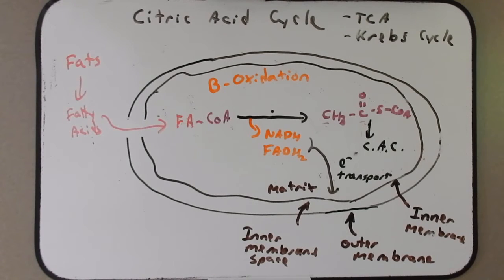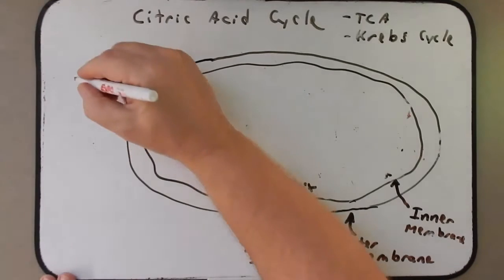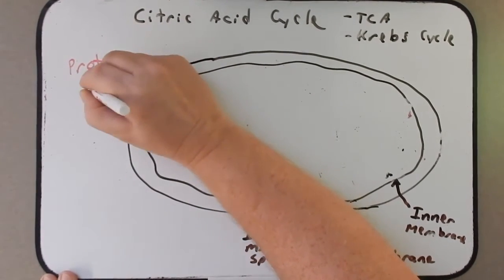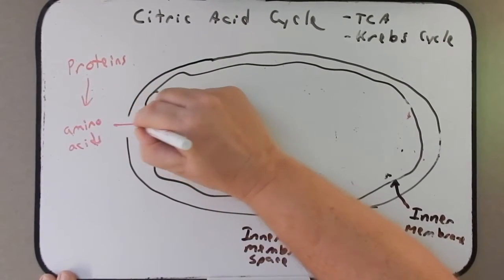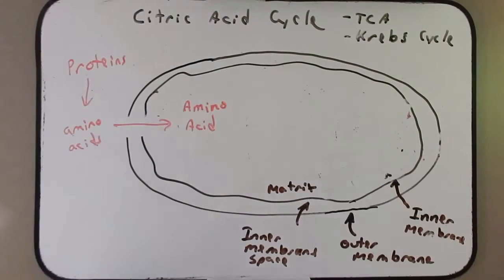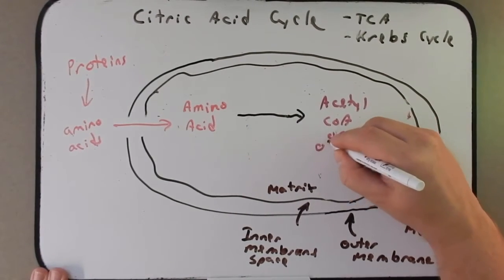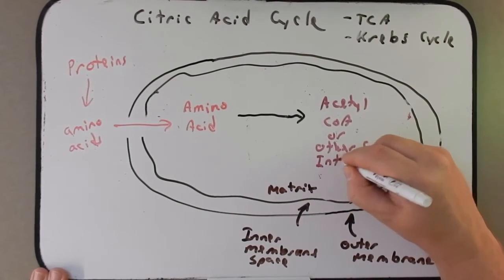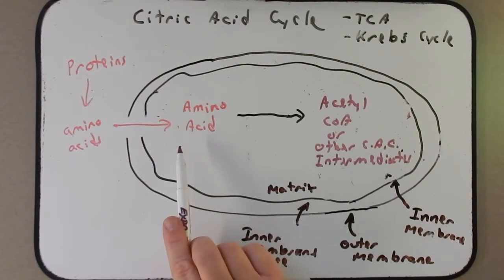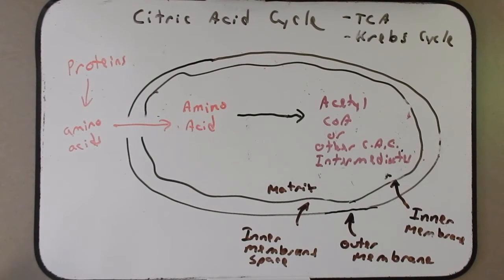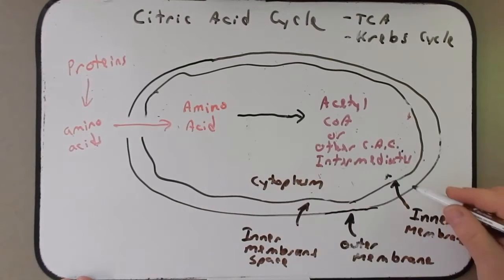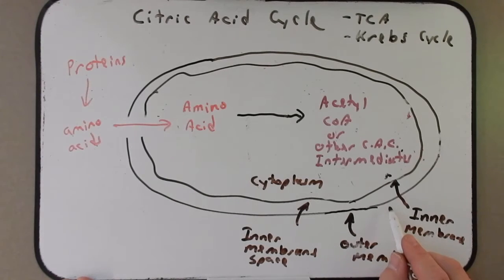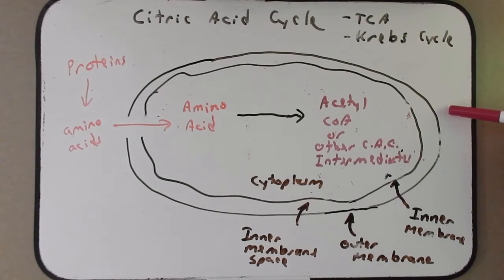Next we're going to talk about how amino acids are converted into acetyl-CoA. Proteins in the cytoplasm can be broken down into amino acids. These amino acids can enter into the mitochondria and be converted into acetyl-CoA, or in some cases into other citric acid cycle intermediates. I just want you to know that amino acids are one of the molecules that can be converted into acetyl-CoA. Now, if this were a bacterium, this would be the cytoplasm, the inner membrane, and the outer membrane — showing how bacteria utilize membranes to produce energy in much the same way the mitochondrion does in eukaryotes.